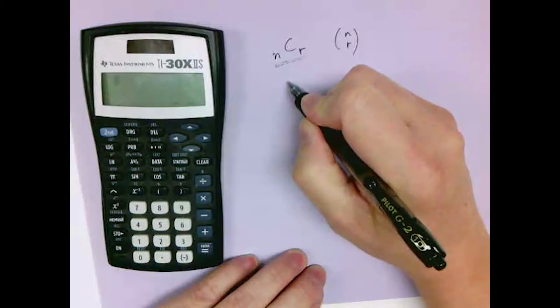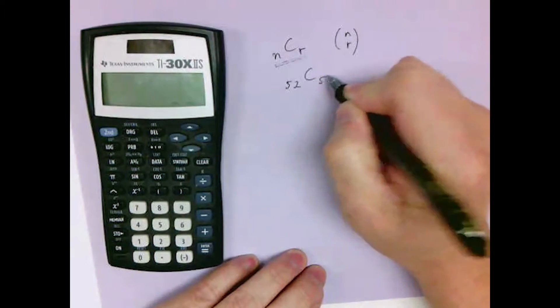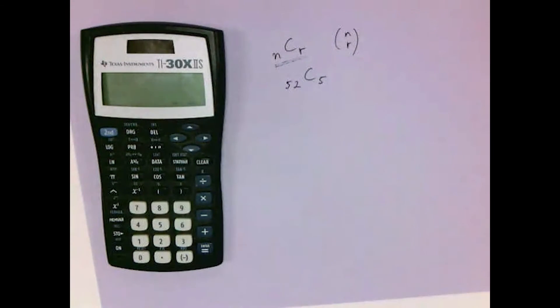For example, compute 52 choose 5, number of ways to select 5 cards out of a deck of 52.